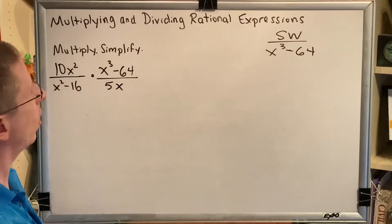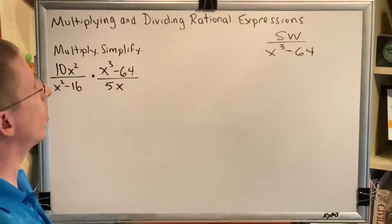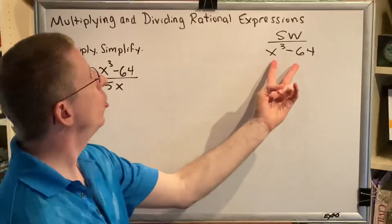Next, greatest common factor. There is no greatest common factor. Next, count the terms. There are two terms.